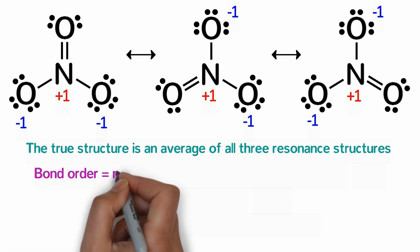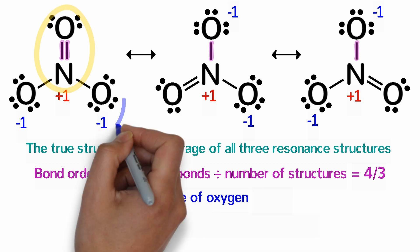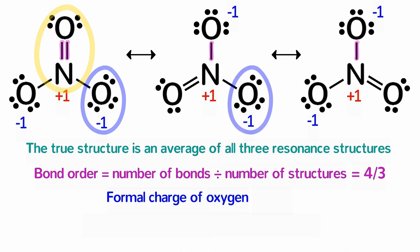We can determine the bond order by dividing the number of bonds by the number of structures. Between these two atoms, there are one, two, three, four bonds on three resonance structures. That means the NO bond order in nitrate is four-thirds or one and a third. Similarly, the formal charge can be averaged the same way. There are two negative charges on this oxygen and three resonance structures, so its actual formal charge is negative two-thirds. This is true for all of the oxygen atoms, giving it a dipole moment of zero.